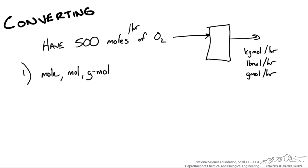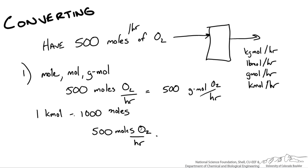So 500 moles an hour of O2 is equal to 500 gram moles O2 per hour. Now if we want to go to say kilomoles we know that 1 kilomole is a thousand moles. So 500 moles of oxygen per hour times our conversion factor, 1 over a thousand moles, gives us 0.5 kilomoles of oxygen per hour. So we've crossed off those two. Pretty straightforward.